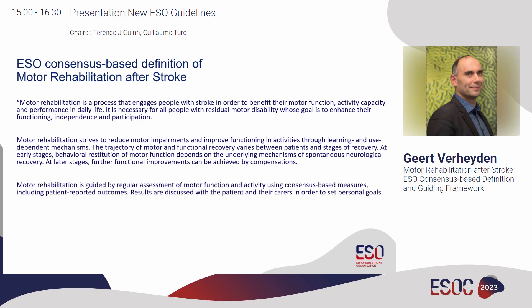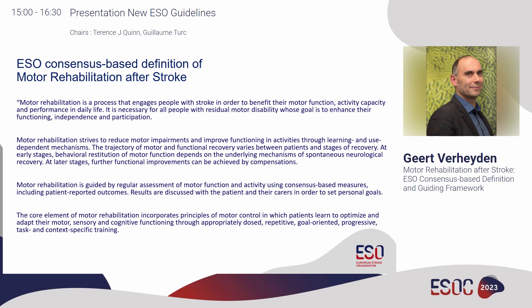The second supporting sentence presents motor rehabilitation as guided by regular assessment of motor function and activities using consensus-based measures, including patient-reported outcomes. Results are discussed with patients and carers to set personal goals. The final supporting sentence focuses on treatment: motor rehabilitation has a core element of incorporating principles of motor control, where patients learn to optimize and adapt their motor, sensory, and cognitive functioning through appropriately dosed, repetitive, goal-oriented, progressive, task- and context-specific training.